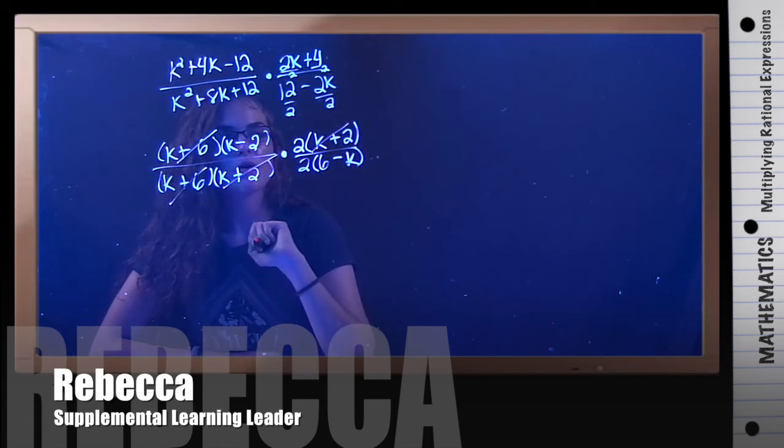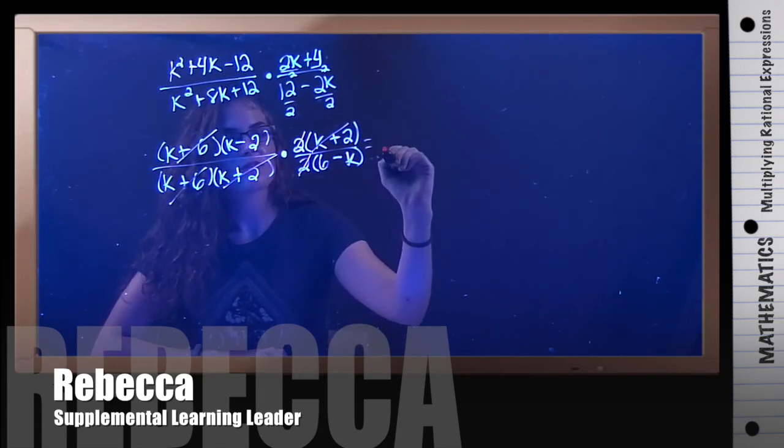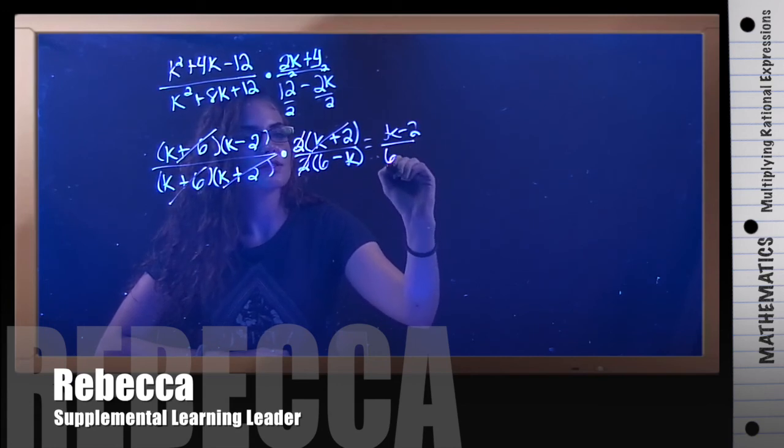And now, we have these 2's cancel out. And what we have left on the top is k minus 2, and on the bottom we have 6 minus k.